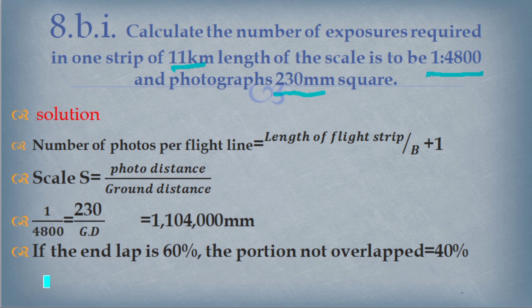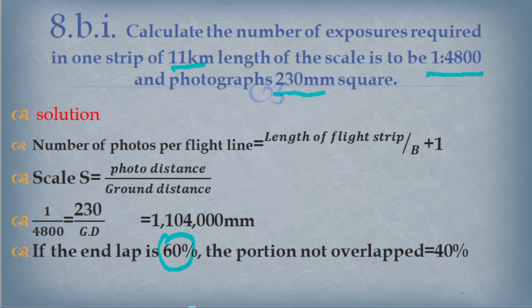An important concept: if the end lap is 60 percent, the portion not overlapped is 40 percent. Remember this — the end lap is normally 60 percent, so the non-overlapping portion is 40 percent. With that noted, the number of photographs in one strip for any given scale of photography can be derived using these simple formulas.